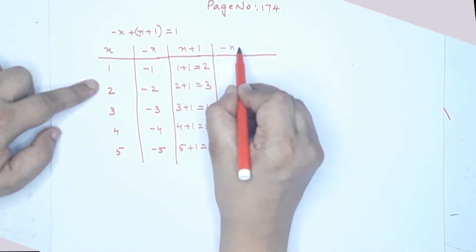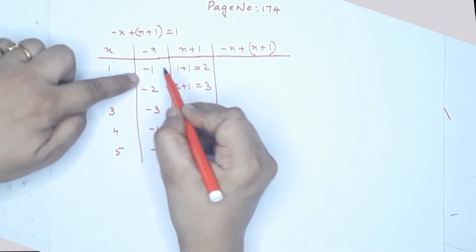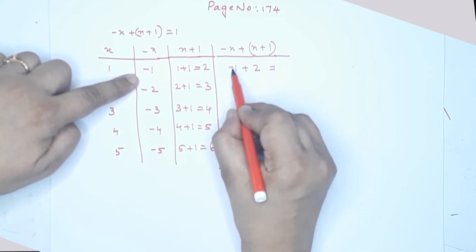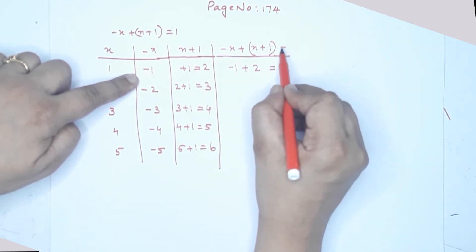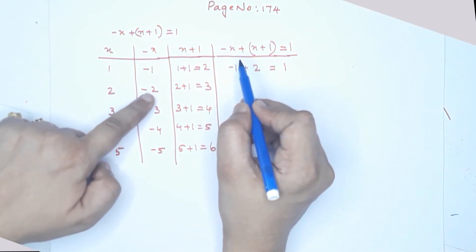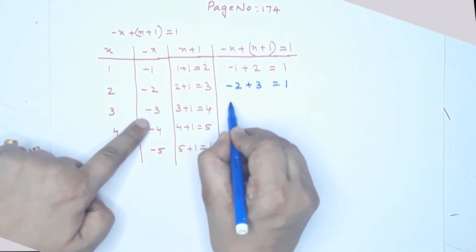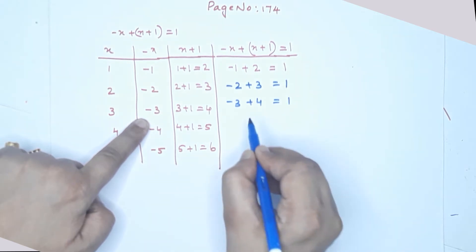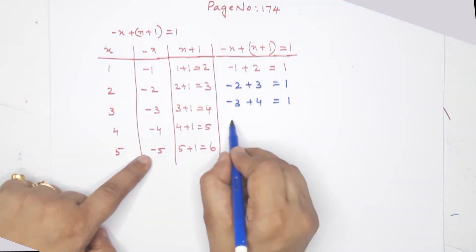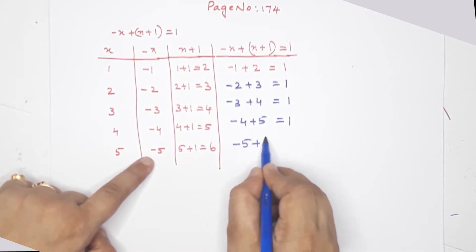So negative x plus x plus 1: negative x means negative 1 plus 2, which means here is 1. Negative 2 plus 3 is equal to 1. Negative 3 plus 4 is 1. Negative 4 plus 5 is 1. Negative 5 plus 6 is equal to 1.